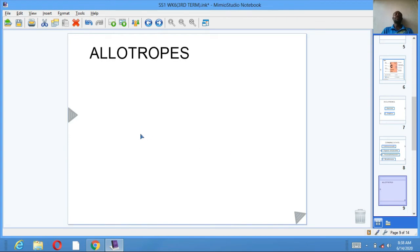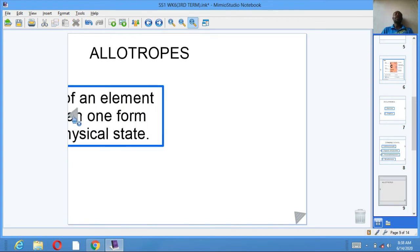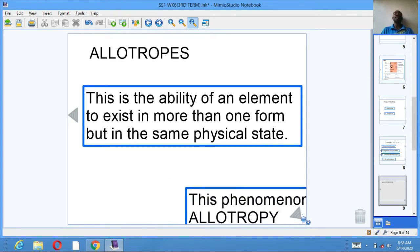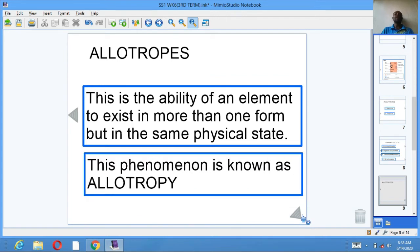Allotropes. Allotropes is a phenomenon where an element exists in more than one form but in the same physical state.